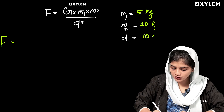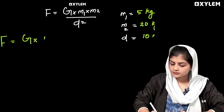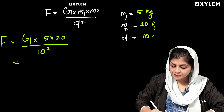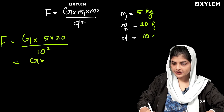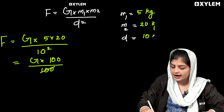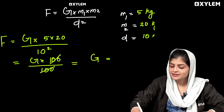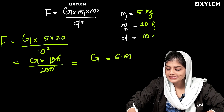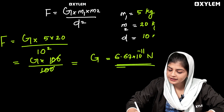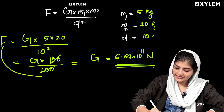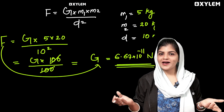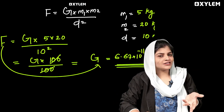M2 is given. F is equal to G into M1 into M2 — that is G into 5 into 20, which gives 100, divided by 100. The 100 cancels, and we get G into 1, which is 6.67 into 10 raised to minus 11 newton. So the force is 6.67 into 10 raised to minus 11 newton. The answer is correct.